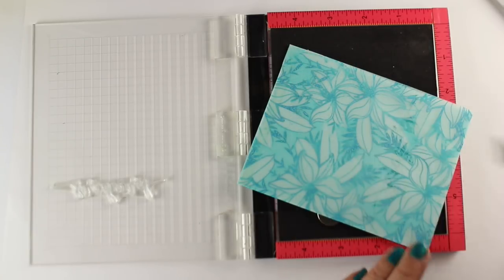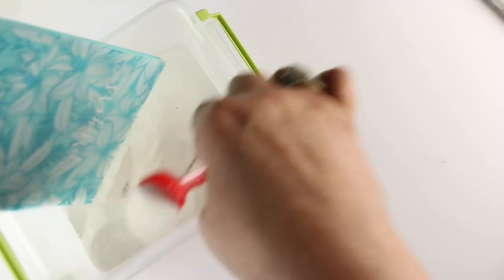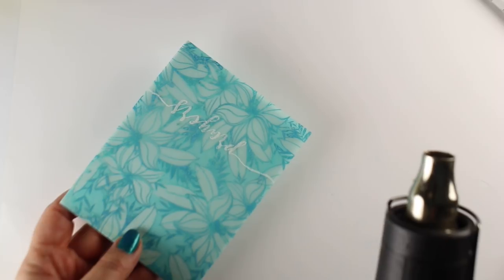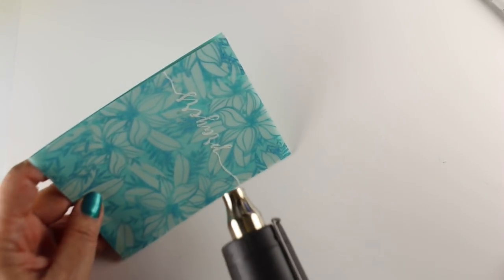I also have a Versamark pen and I took the edges of that word prayers and extended it off the edge of the card. And now I'll put my Hero Arts white embossing powder on it, flick off the excess, and then I'm letting the heat gun warm up first.